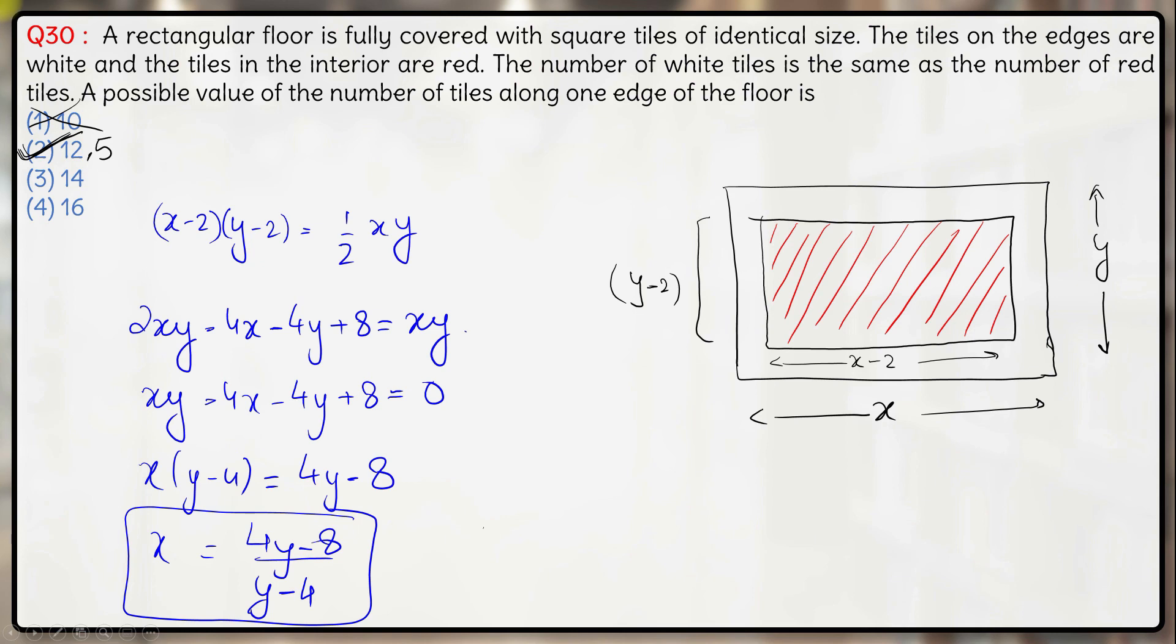x and y should be integers here which are number of tiles. So option 2 is the correct answer here.